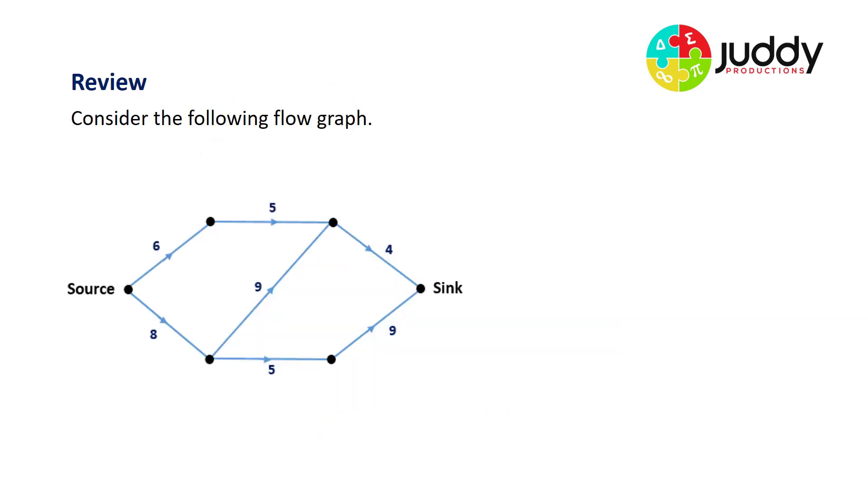So a quick review of our basics for flow graphs. Flow graphs involve directional edges and they represent scenarios such as the volume of water per second in pipes, for example six liters per second or five liters per second. Another scenario could be maximum number of cars per second traveling on a road, or it could be some kind of data transfer system that represents number of terabytes per second capacity.